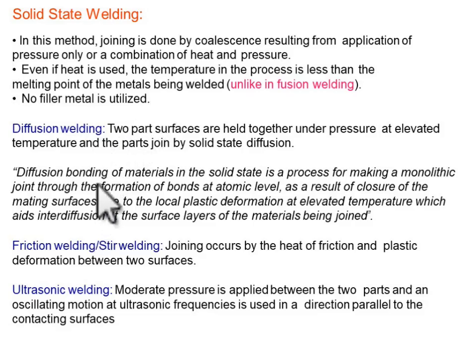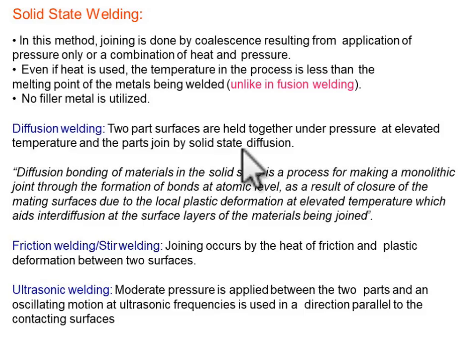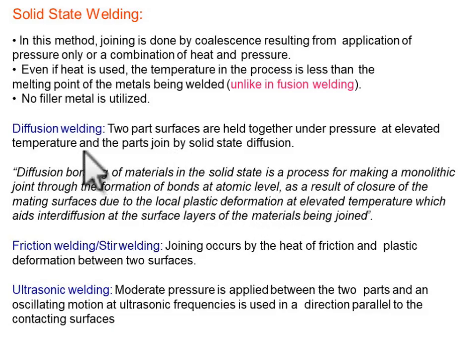The first type of solid state welding is diffusion welding. In diffusion welding, we keep two joining materials together at high pressure and elevated temperature. The joining process is done with the help of solid state diffusion — when we keep two materials together at some pressure, atomic diffusion takes place between the two parts, causing bond formation and completing the joining process.